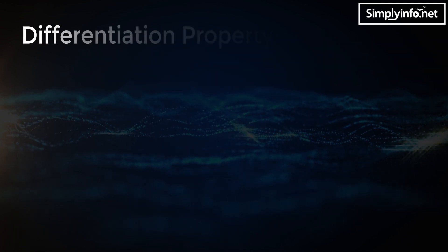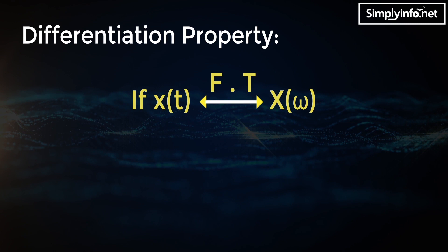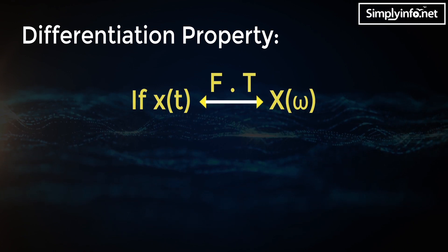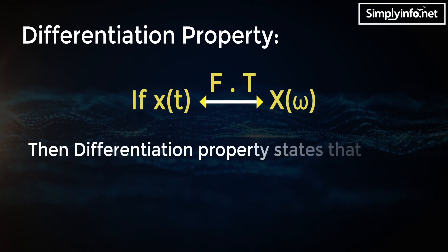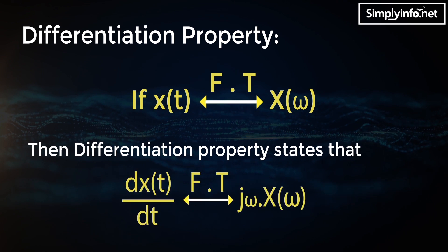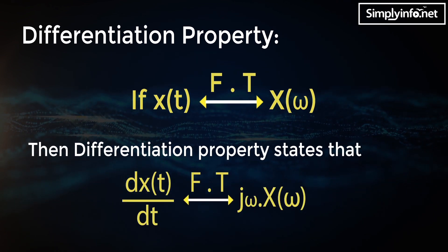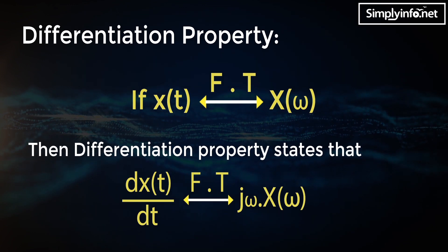Differentiation property: if Fourier transform of x(t) is X(ω), then the differentiation property states that Fourier transform of dx(t)/dt is equal to jω · X(ω).